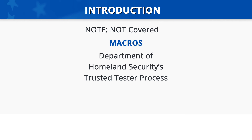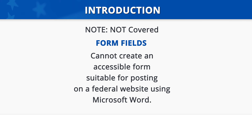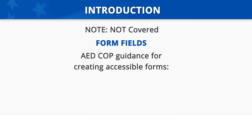Information about the Trusted Tester Process can be found at the provided link. You cannot create an accessible form suitable for publishing on a federal website using Microsoft Word. If you need to create a form, then another application must be used to add the actual form fields into the document. See the AED-COP guidance for creating accessible forms at www.section508.gov.